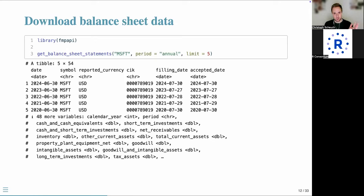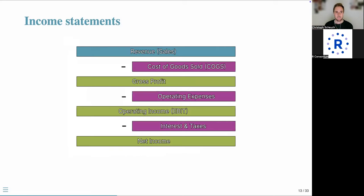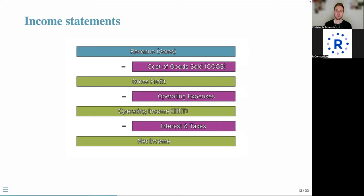Financial statements also contain income statements, which show a company's financial performance over a specific period — quarterly or annual — breaking down revenue, costs, and profits. At the top you start with revenues or sales: total income from goods or services sold. Then you subtract the cost of goods sold (COGS) — direct costs like raw materials or labor — to arrive at gross profit, showing basic profitability from core operations.